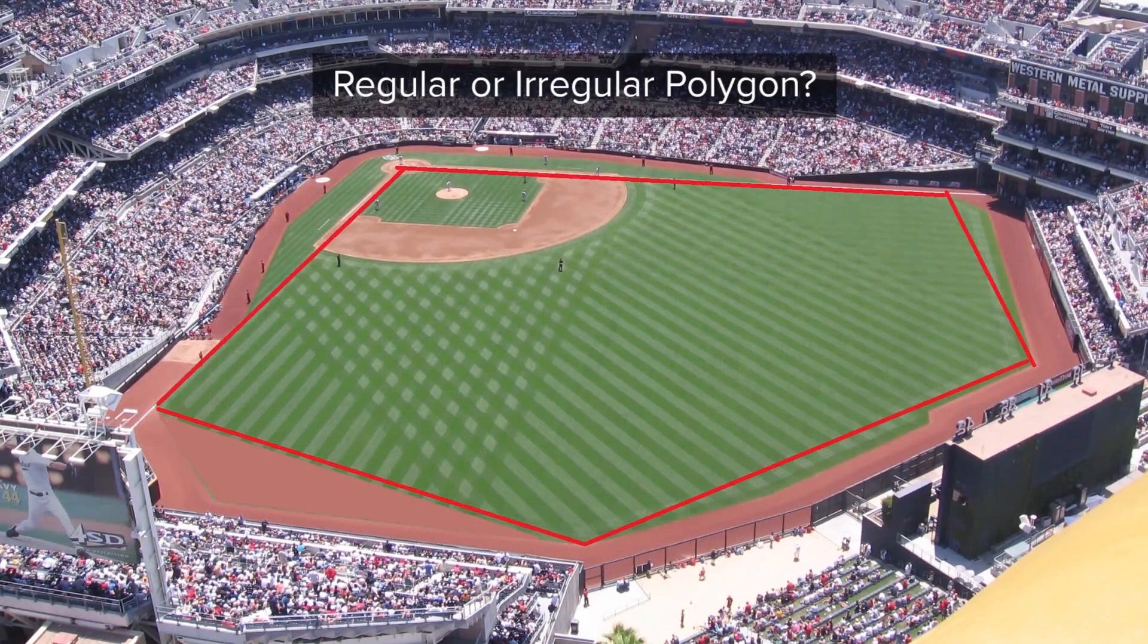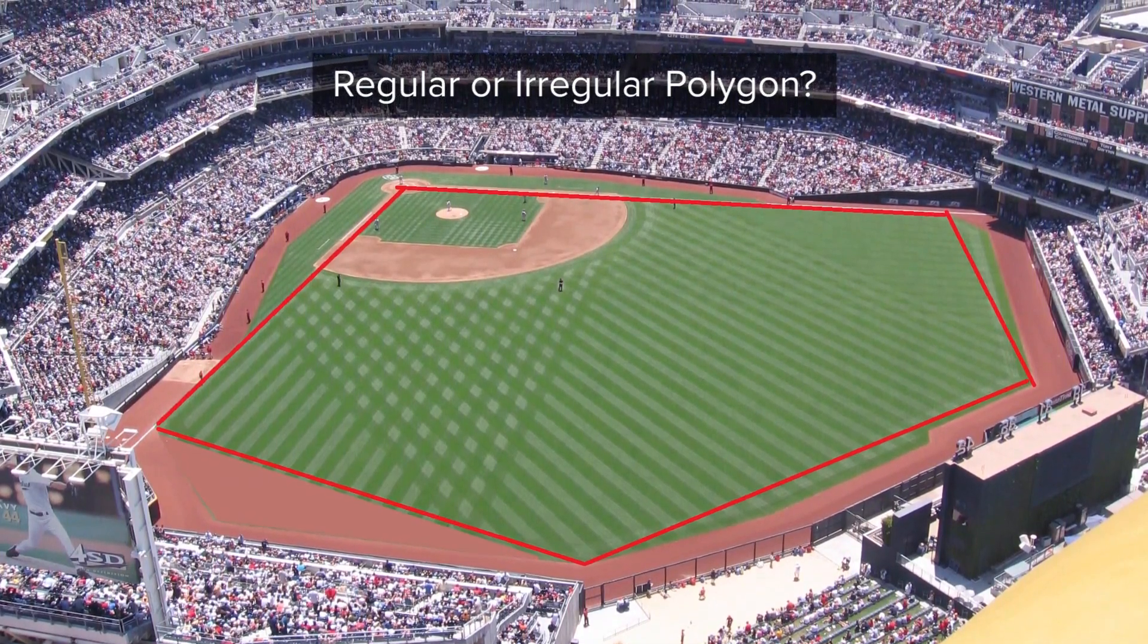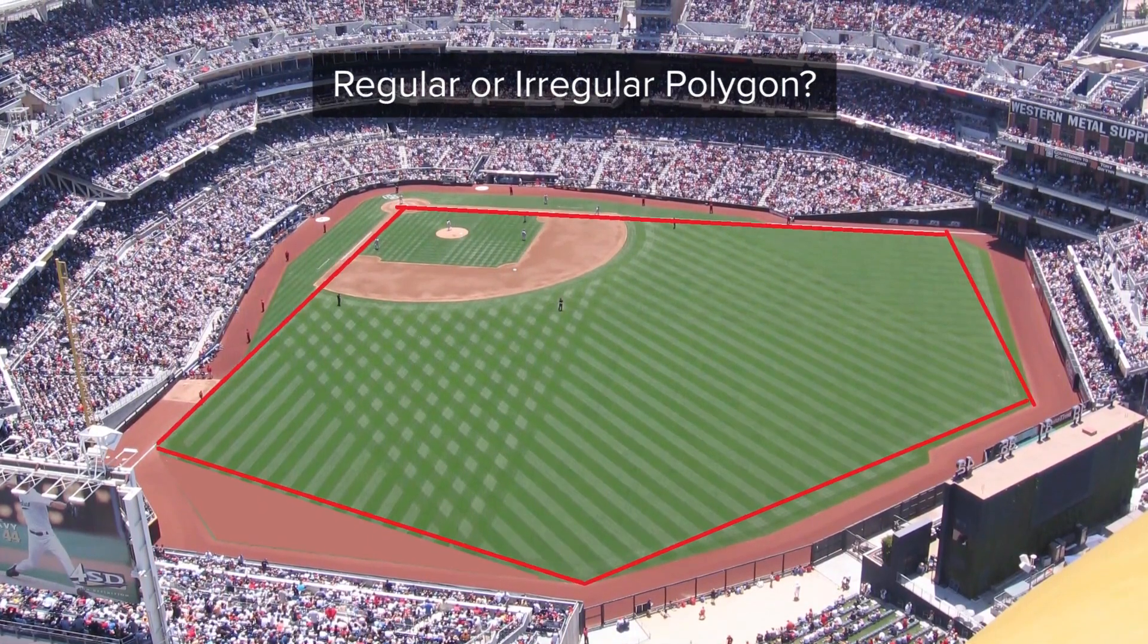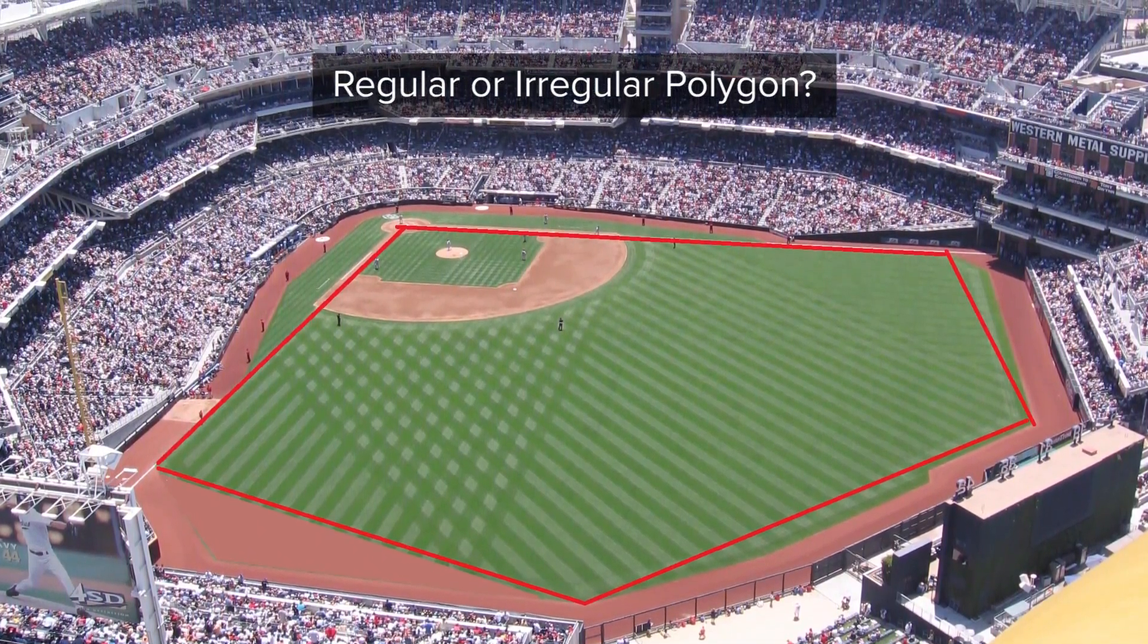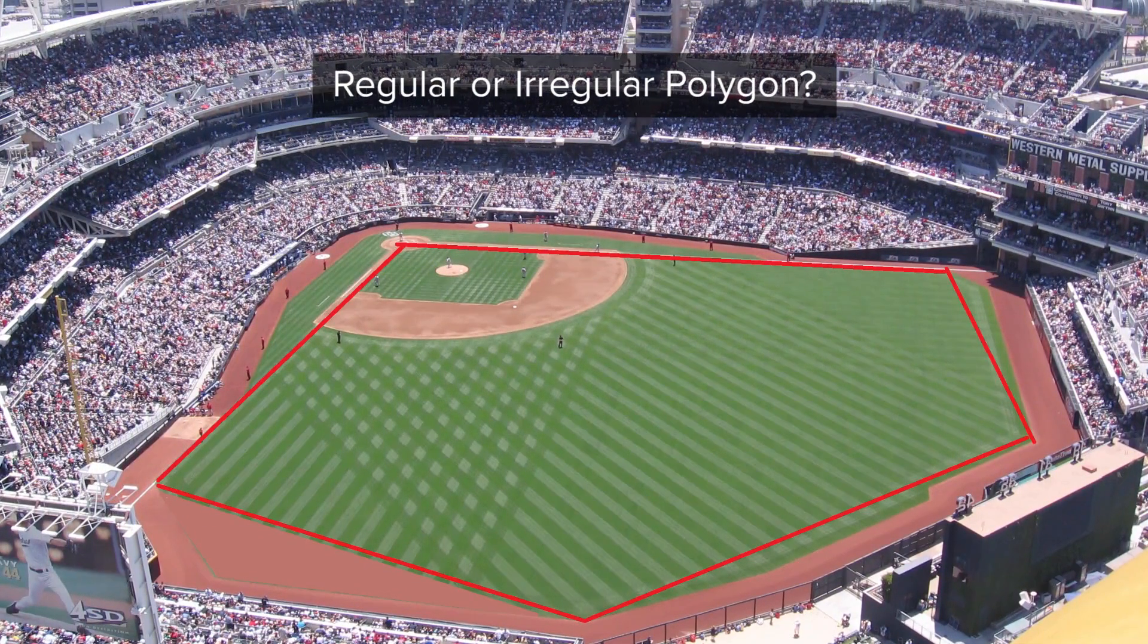So, this baseball field, the one that we saw earlier, now tell us which type of polygon is this. Is it regular or irregular? We can see that the five sides of this field do not have an equal length. So, this is an irregular polygon.